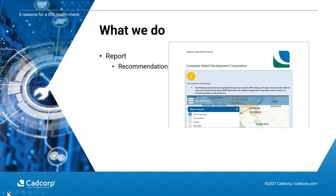We also provide recommendations. Here's an example: in a web map application there is an instance of the base layer as part of the map features. In CAD Corp Web Map there's a separate base layer switcher, and the base layer should not be part of the map features, as it allows users to turn the base map on and off on top of an existing base map. Although it's not critical, it's not the ideal way to set it up and it can confuse users. We've provided a rating of two and recommendations on how to proceed and correct this.